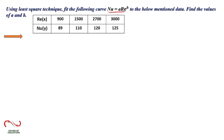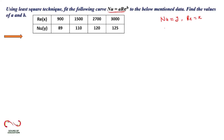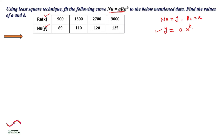This is a type of power equation. If we consider Nu = y and Re = x, we can write this equation in the form y = a*x^b, which is the second type of power equation. We need to find the values of a and b from the given data. Re (Reynolds number) values are: 900, 1100, 1500, 2700, and 3000. Nu (Nusselt number) values are: 89, 110, 120, and 125.